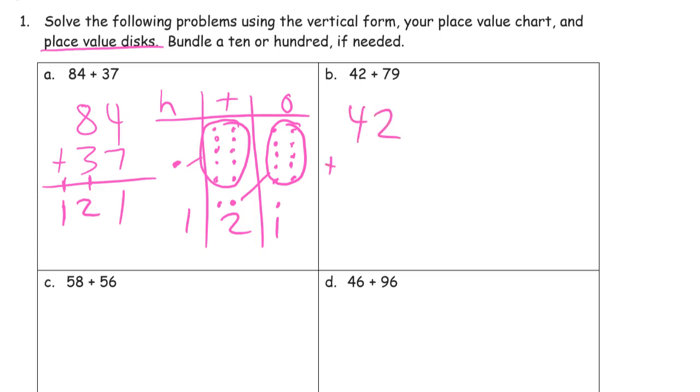42 plus 79. I urge you to do the vertical form first, even if you're drawing the HTO chart, just as I'm doing. Do the vertical form first. Because otherwise, the tendency is you're not going to use the vertical form. You're not going to practice it. You're not going to get any better at it. If you just look at the numbers and write down the sum, or if you do it in your head and write down the sum, use the steps to practice the vertical method. 2 plus 9 is 11. Bundle that 10. That's a 10 and a 1. 4 and 7 is 11, one more is 12. 12 tens. That's 100 and two tens left over. There's your 100.